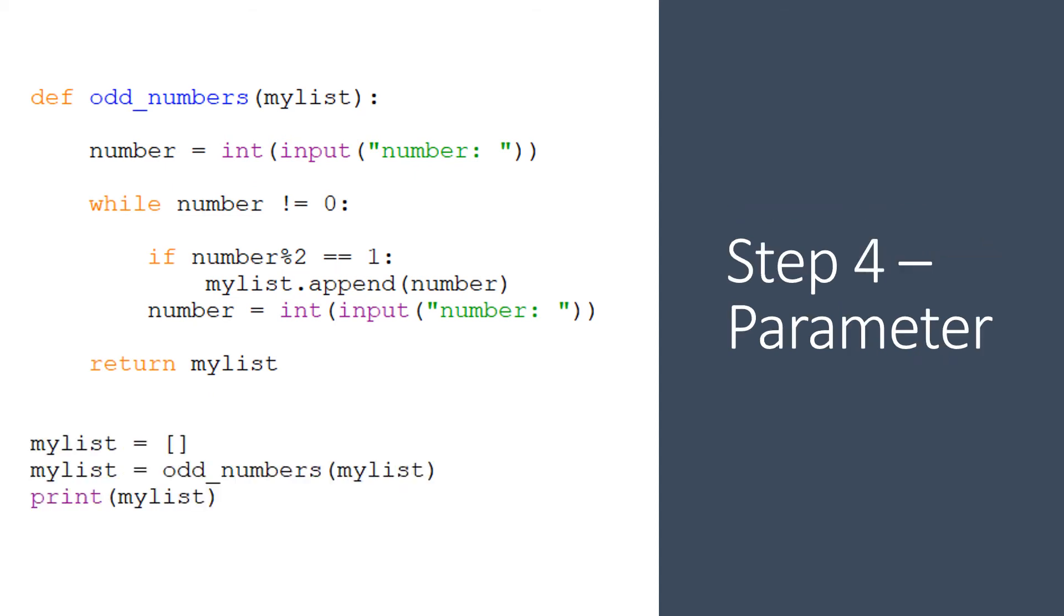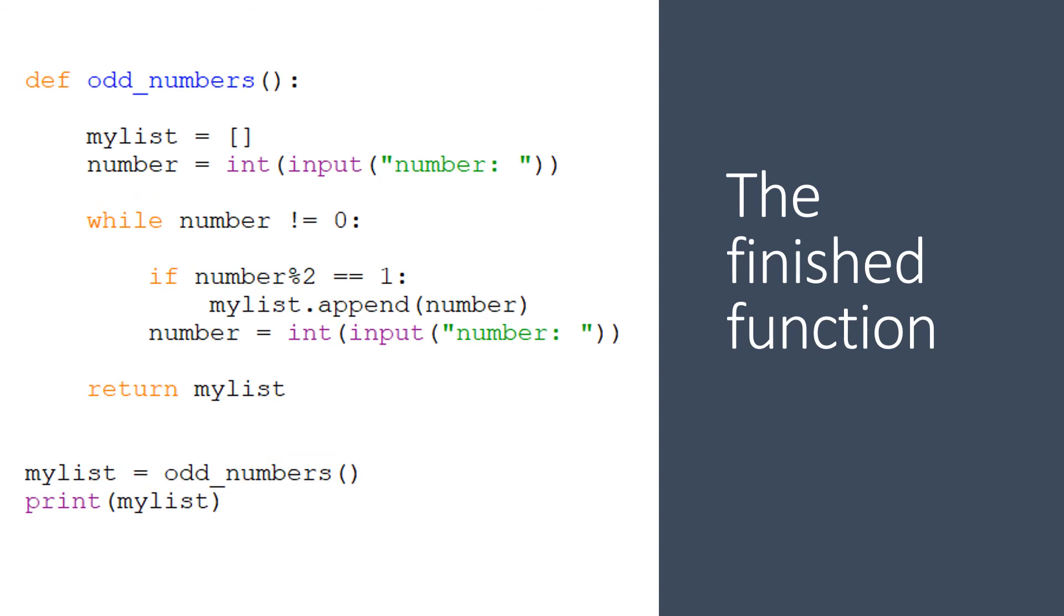And finally, do I need a parameter? When my function was recursive, I was using a parameter to pass the list along. And in the main program, I had to call my function with that parameter in the first instance, an empty list. Now that it's an iterative function, I don't need that parameter. I'm setting up the empty list inside the function. I don't need to pass it as a parameter.